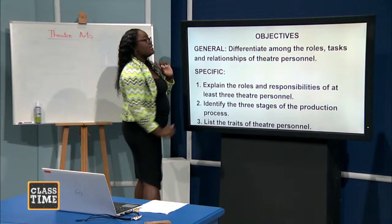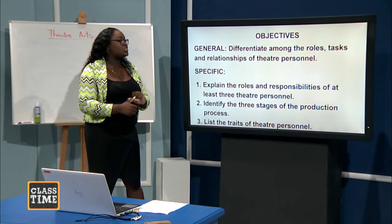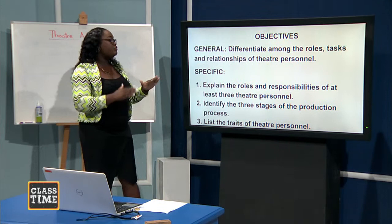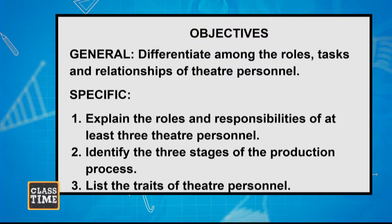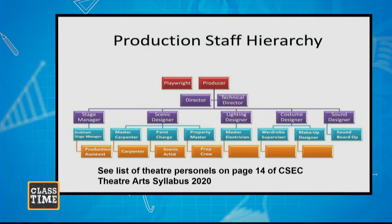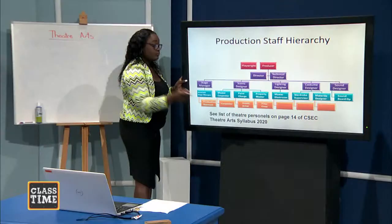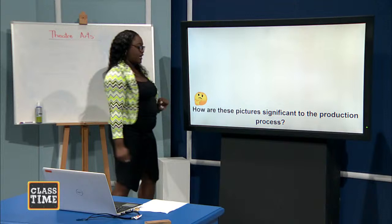In this case, the objective is mounting or staging a successful theatrical performance. Today you will differentiate among the roles, tasks, and relationships of theater personnel. By the end of the lesson, you will be able to explain the roles and responsibilities of at least three theater personnel, identify the three stages of the production process, and list the traits of the different theater personnel. Here we have a production staff hierarchy — this diagram shows us how each member of the family works together for a successful production.